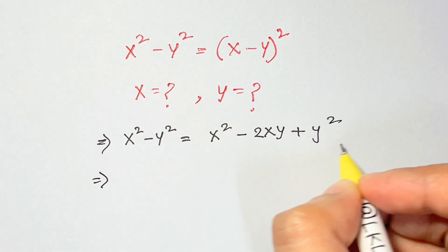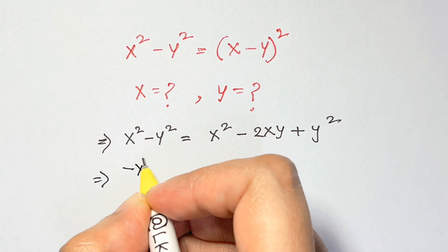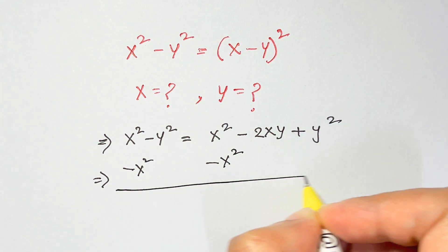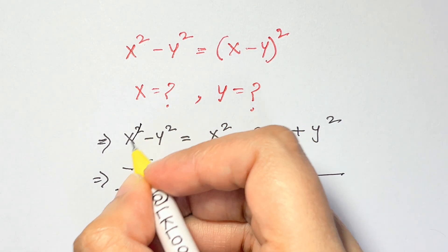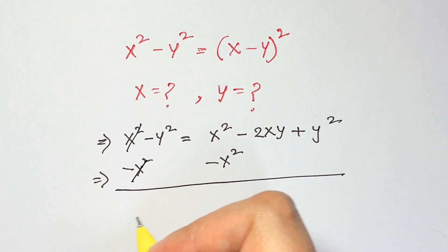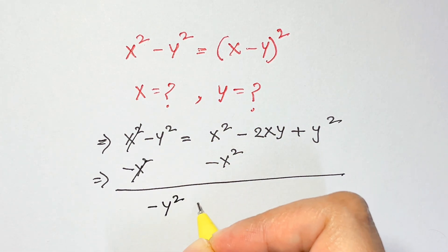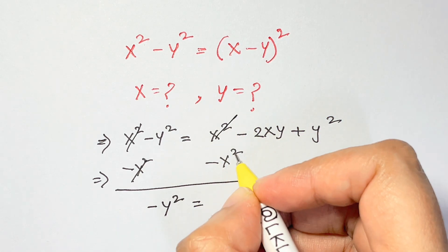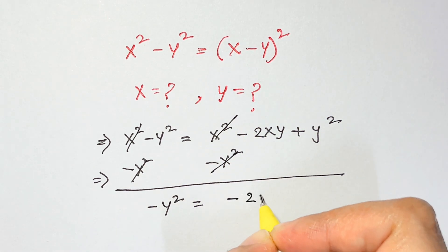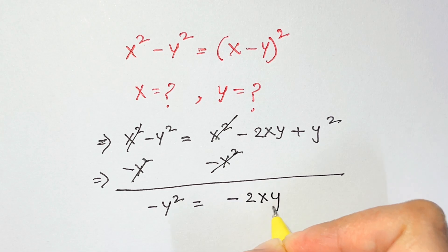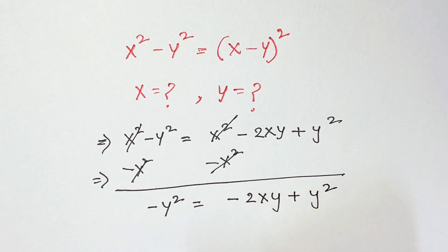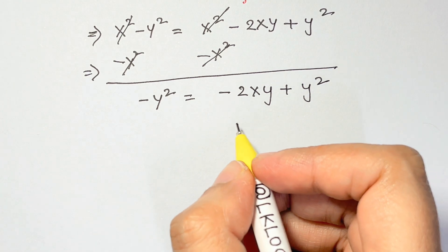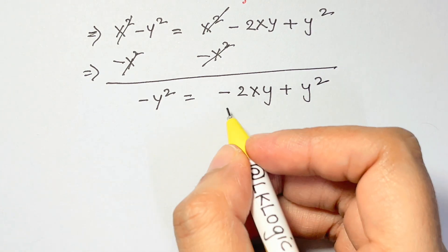Now we subtract x² from both sides — x² minus x² cancels — so we have minus y² equals minus 2xy plus y². Let's bring all the terms to one side.